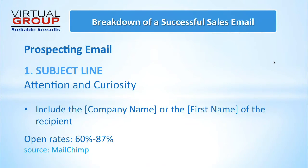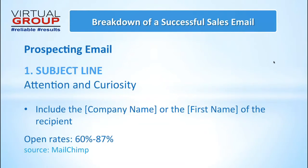The subject line is really important. If you include the company name or the first name of the recipient in the subject line, according to MailChimp, this brings open rates up to 60% to 87%. If you actually take the time to put the emails together where you've done the research and have the first name of the recipient, that's very effective — even better than just the company name for open rates.